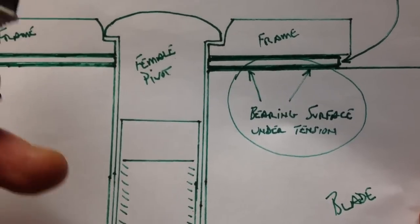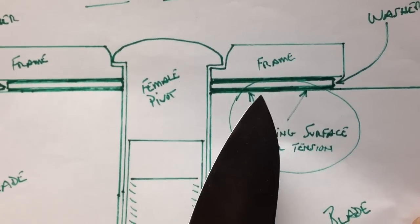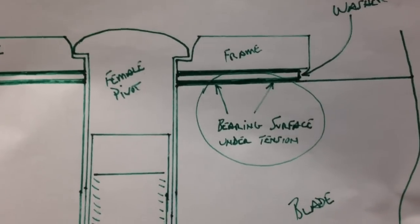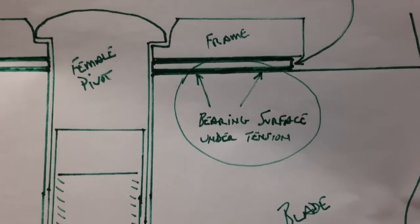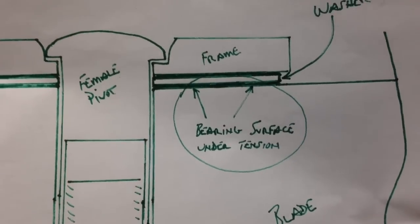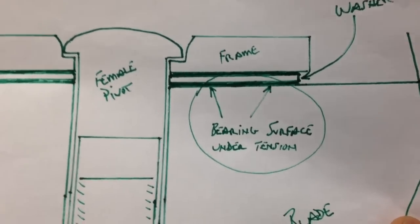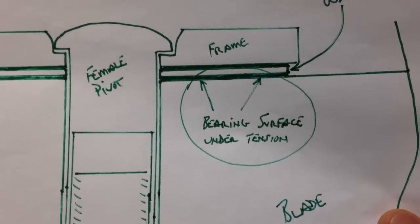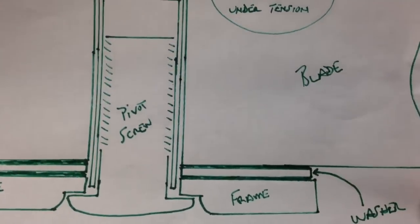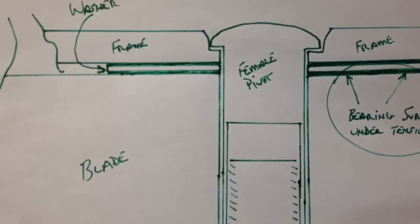Now if you notice these bolted areas are where the washer contacts the blade and the frame. This is both a bearing surface and a stop or bearing surface under tension as I've indicated here. The tighter that you tighten the pivot screw the more tension there is and the more friction there will be in that bearing surface.